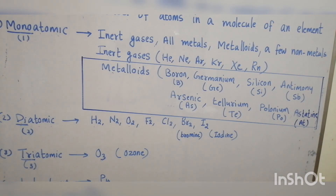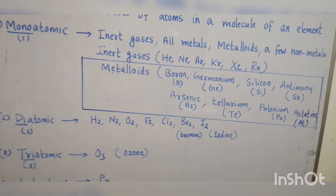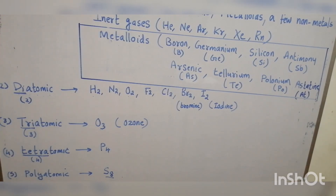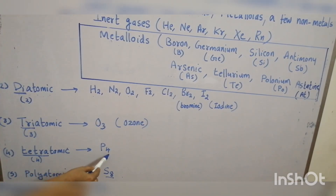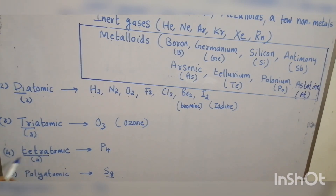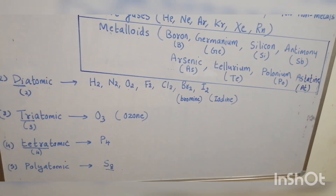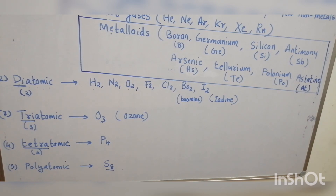Tetraatomic means there are four atoms present in the molecule — tetra means four. And polyatomic — poly means many — means there are more than four atoms present in the molecule of these elements.